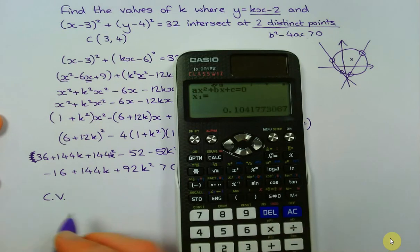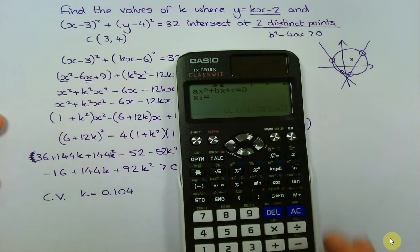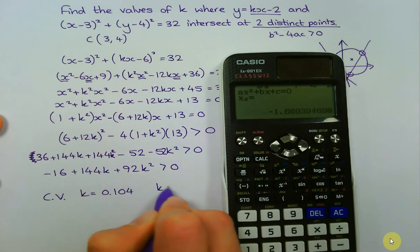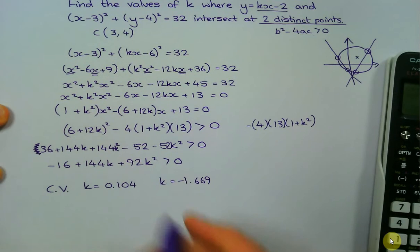So my first solution to... sorry, three decimal places: k = 0.104, and the second one is -1.669.